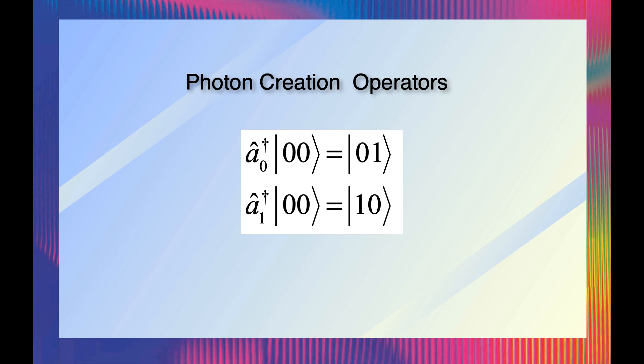The photon creation operators operate on single photon modes. For instance, for the beam splitter, the A0 and A1 operators create photons in each of the inputs by operating on the quantum vacuum state called 00. This creates the 01 and 10 states, each describing a single photon in each input.